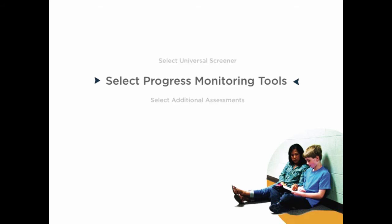Select reliable and valid progress monitoring tools that can be used to guide intervention decisions. Progress monitoring is an essential component that occurs daily in the classroom as teachers watch, listen, and reflect on student growth. In a tiered system, progress monitoring refers to the technically sound tools that give us a motion picture over time of progress in particular reading or math domains.